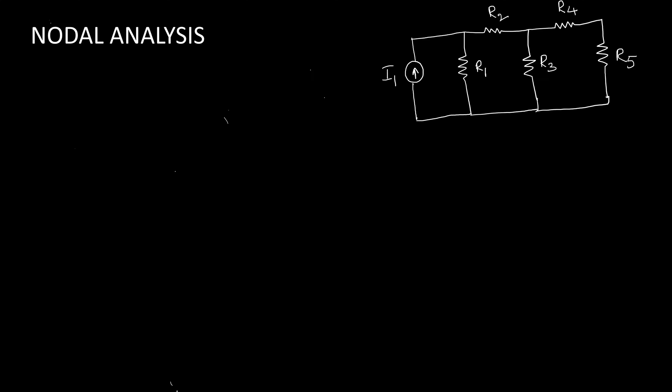The second step is to identify the number of nodes. Here is the first node and here is the second node. We identify nodes at points where current divides. Now the third step: we assume the node voltages V1 and V2. The next step is applying KCL at each and every node.